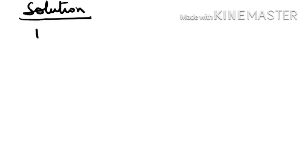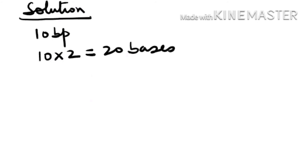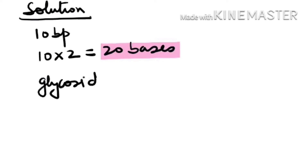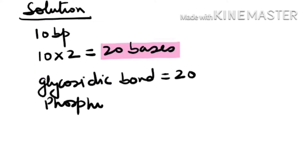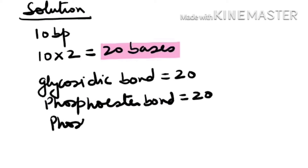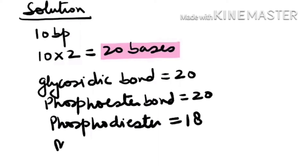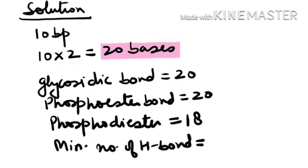Solution: 10 base pairs means 20 bases. So the glycosidic bond count will be 20, the phosphoester bond count will be 20, but the phosphodiester bond count will be 18. The minimum number of hydrogen bonds will be 20.